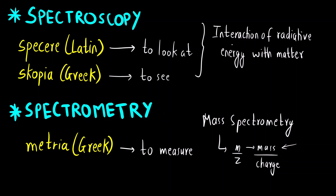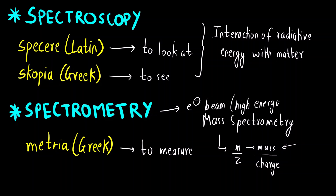A spectroscopic technique involves the interaction of radiative energy with matter — we don't measure anything in spectroscopy. Spectrometry is completely different from spectroscopy. Always remember it is mass spectrometry because here we measure things; we don't observe the interaction of radiative energy. In mass spectrometry, we irradiated the molecule with a high energy electron beam, not with any radiative energy.